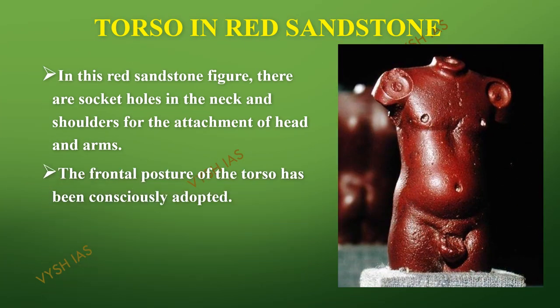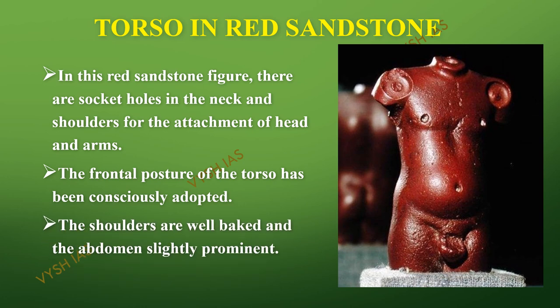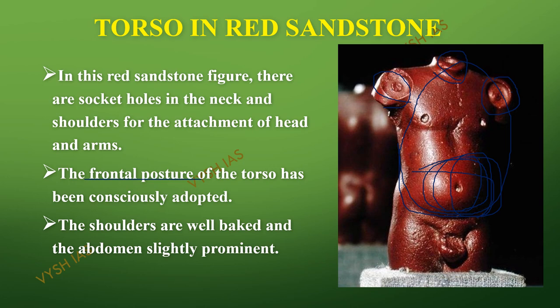Now we are going to see about the torso in red sandstone. The word torso means the body excluding the head, neck, and limbs. This figure has socket holes for the attachment of the head and arms, meaning the head and arms were made separately and then attached — we may not have found those attachments. The frontal posture has been very carefully done, and the abdomen is slightly prominent, like it has a belly, which shows it was consciously made that way.